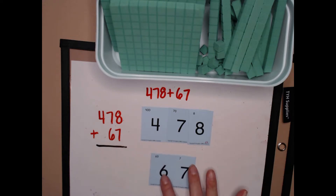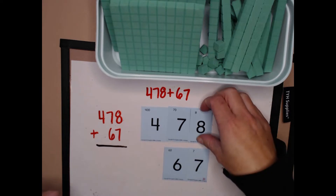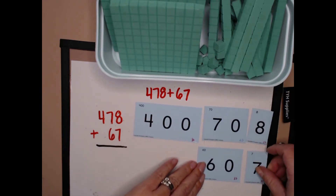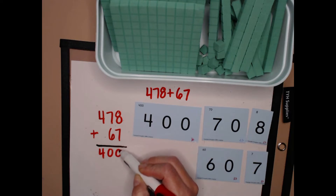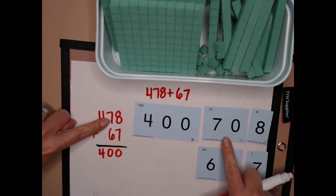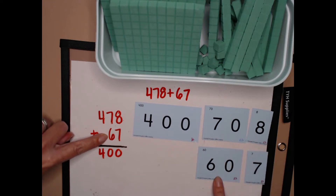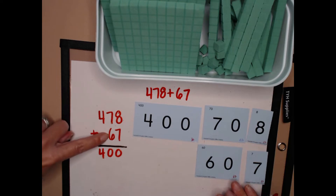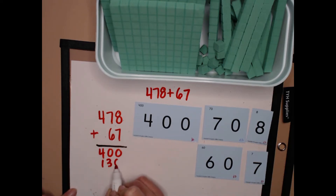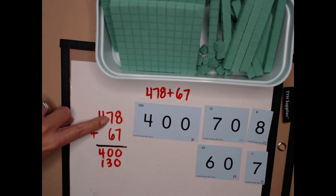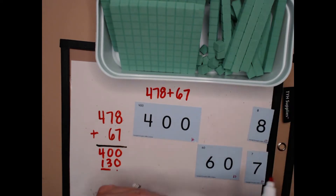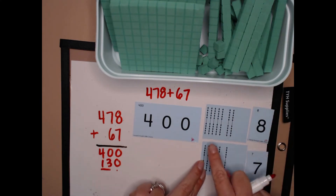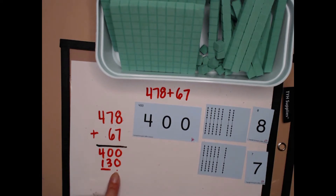With my secret code cards I have four hundred seventy-eight plus sixty-seven. If I take these apart you can see them by place value. I don't have any hundreds here and I only have four hundreds. Four hundred plus zero hundreds equals four hundred. Then I have seven tens which is seventy and six tens which is sixty. Seventy plus sixty equals one hundred thirty. Or I could say seven tens plus six tens equals thirteen tens.